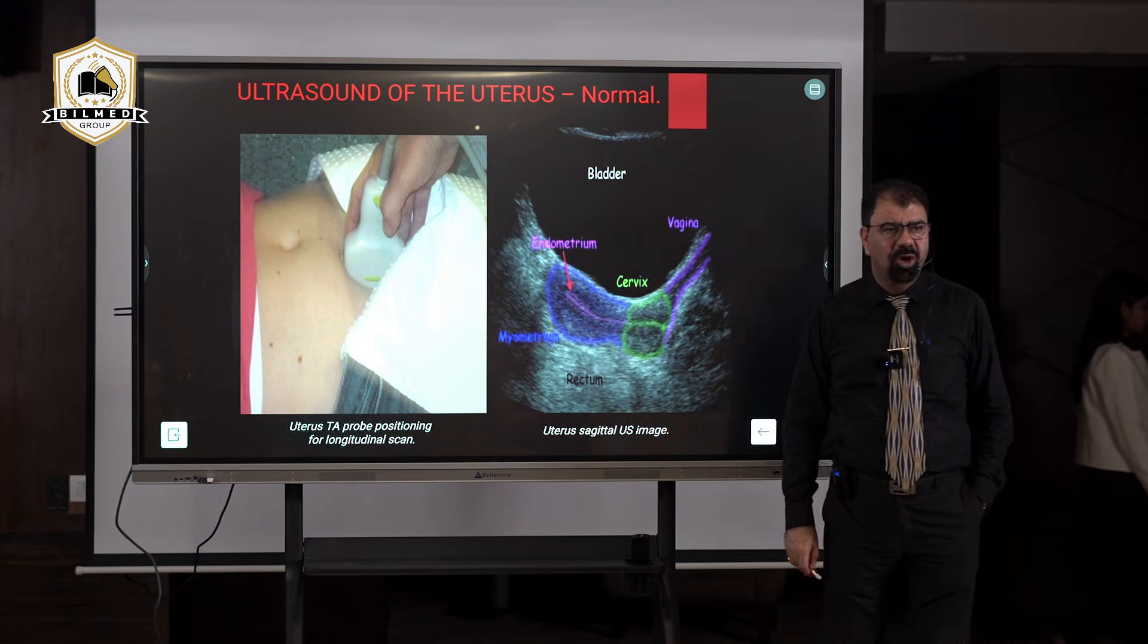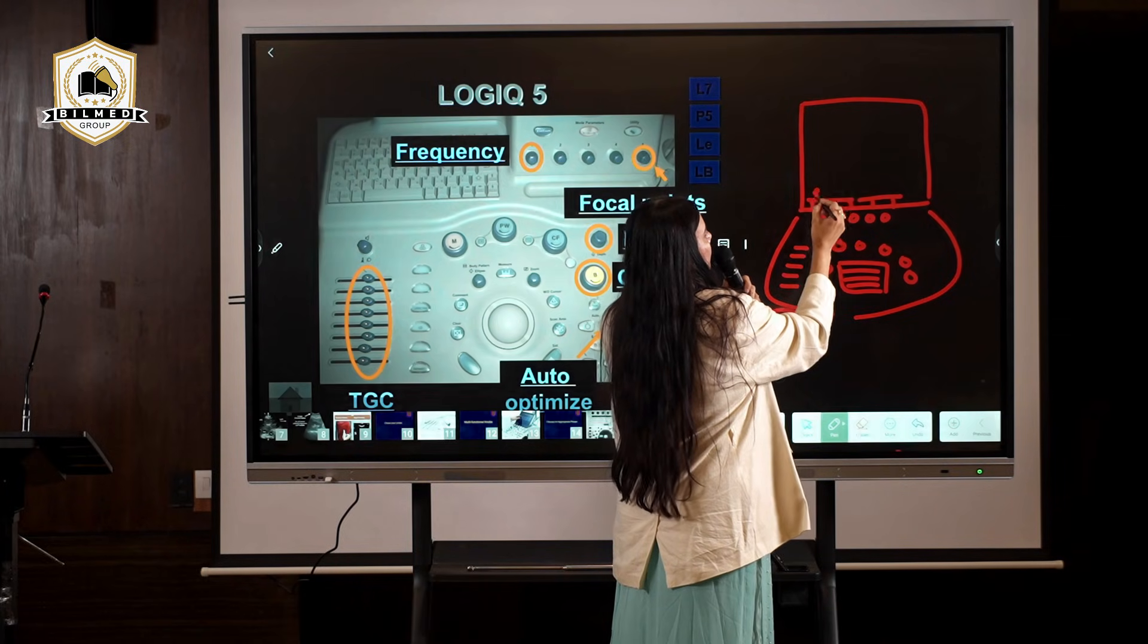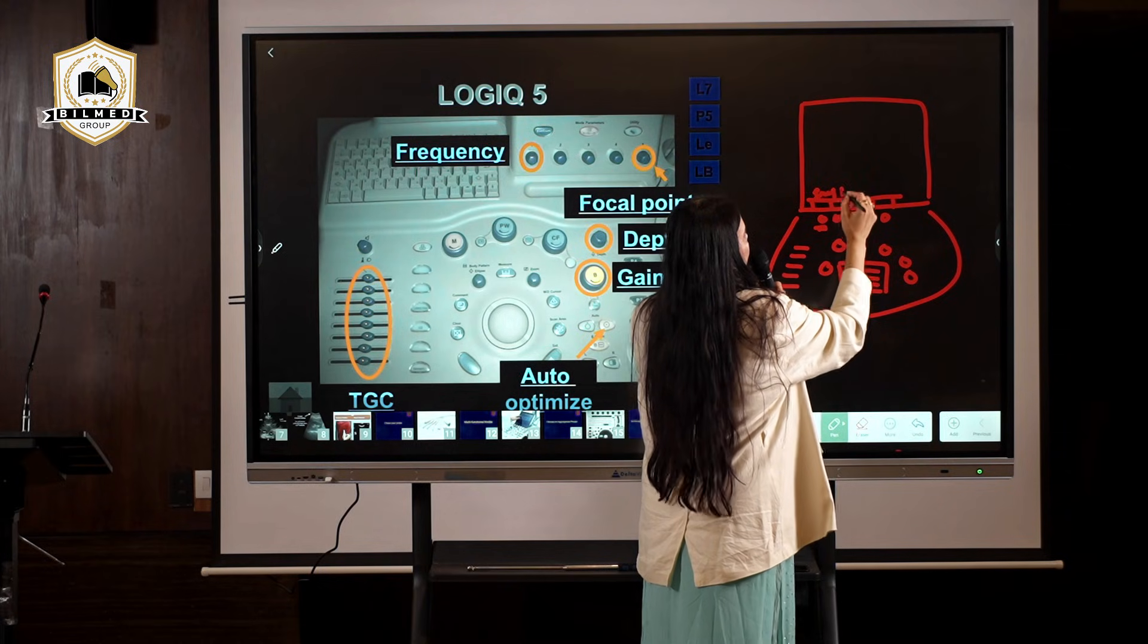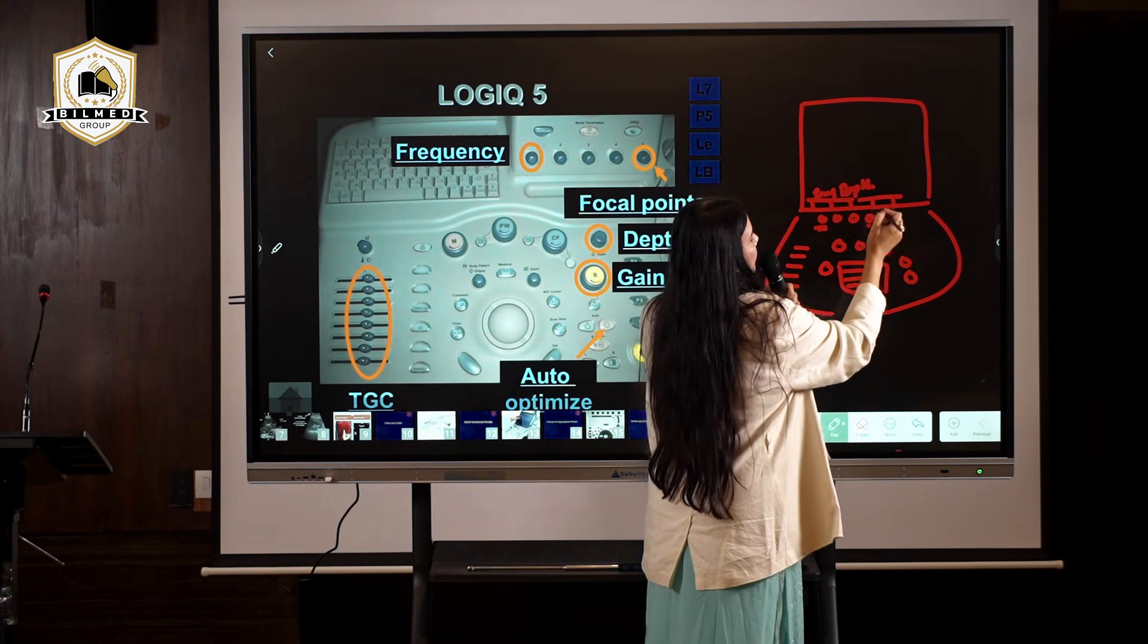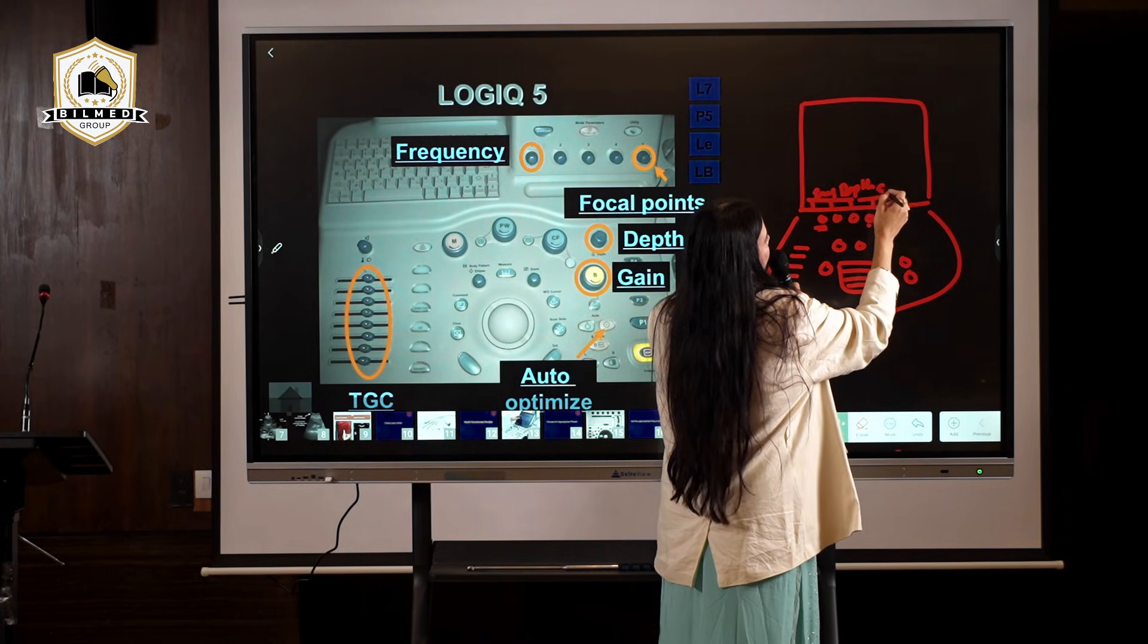Your bladder should not be over-extended and neither it should be empty. This box is going to reflect something like frequency. Then this knob will reflect depth. Here on the dialogue box, this will reflect say gain, or it will reflect focus or something like that which this dialogue box is going to tell you.